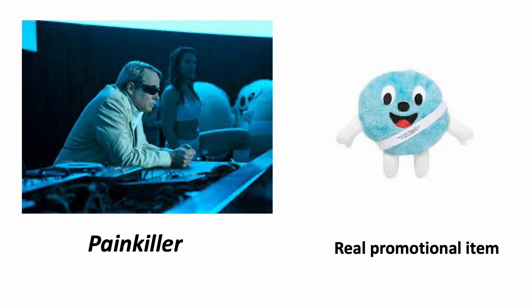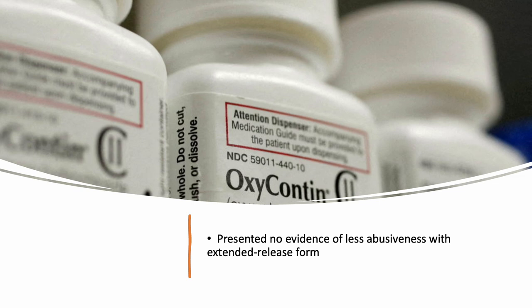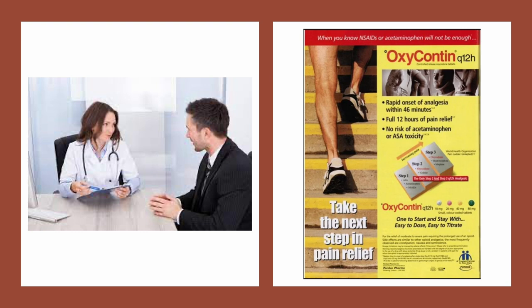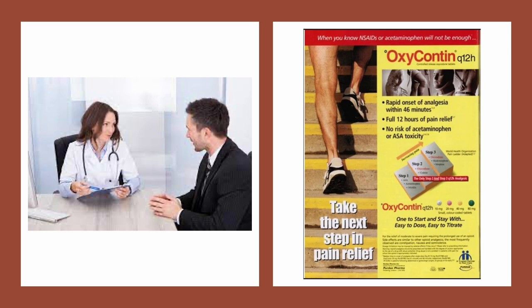Purdue Pharma marketed OxyContin as a breakthrough in pain management, emphasizing its long-lasting effect. The company claimed that the extended-release formulation made the drug less likely to be abused, but there was no evidence supporting that specific claim. They also adopted aggressive marketing strategies — sales representatives reportedly downplayed the drug's abuse potential and addiction risk with healthcare providers. Representatives were specifically trained to target doctors, including primary care physicians, encouraging them to prescribe OxyContin for a wider range of pain conditions. They even invented the term 'pseudo-addiction' to describe patients seeking more medication due to under-managed pain, potentially leading doctors to increase doses.